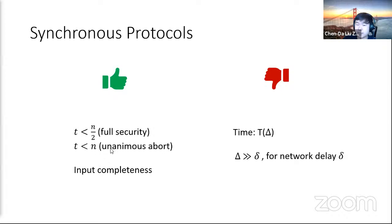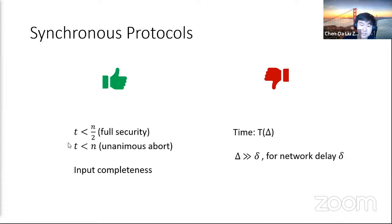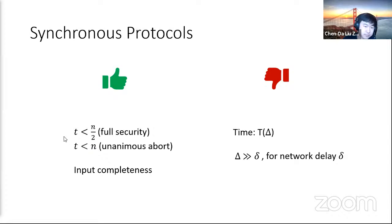The downside is that running a synchronous protocol over the internet, where actual delay is hard to predict, requires setting round length big delta large enough to accommodate any possible network delay. This means delta must be set much larger than the typical network delay small delta. So the speed of synchronous protocols is proportional to the conservatively assumed worst-case delay, making them slow when executed over the internet.